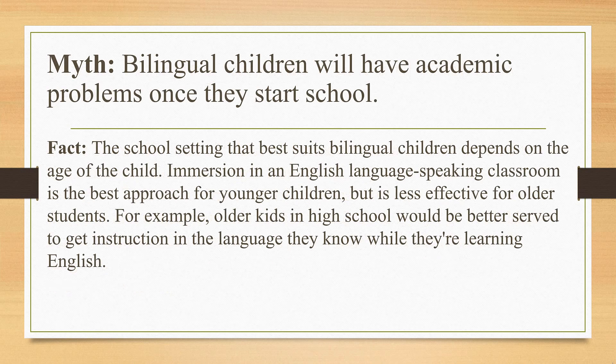Myth number six: bilingual children will have academic problems once they start school. The fact is, the school setting that best suits bilingual children depends on the age of the child. Immersion in an English-speaking classroom is the best approach for younger children, but is less effective for older students. For example, older students in high school would be better served to receive instruction in the language they know while learning English as a separate service.